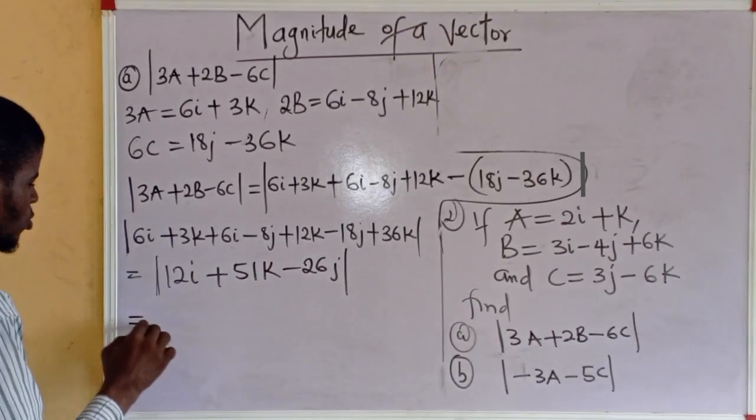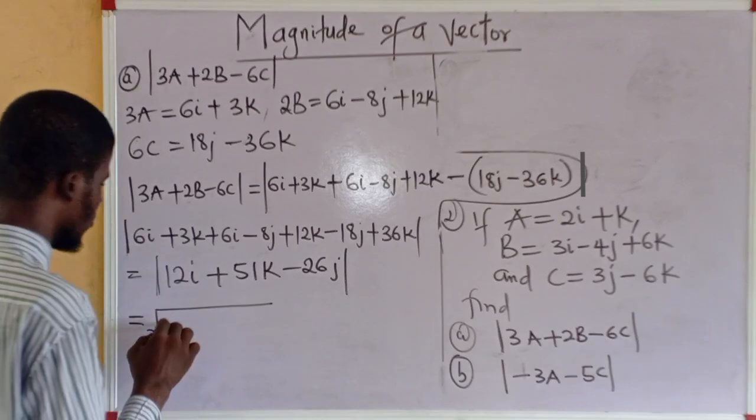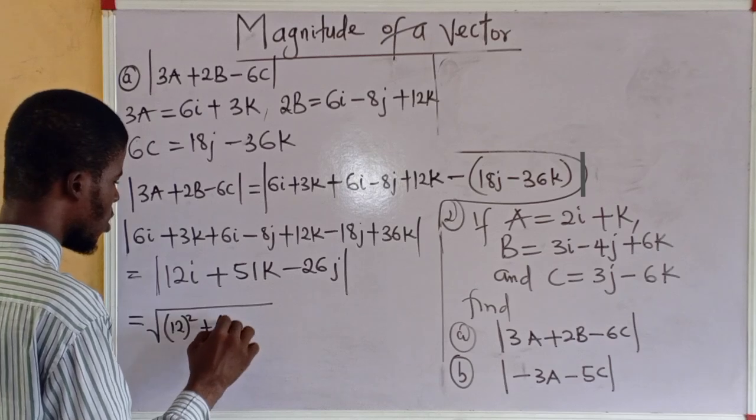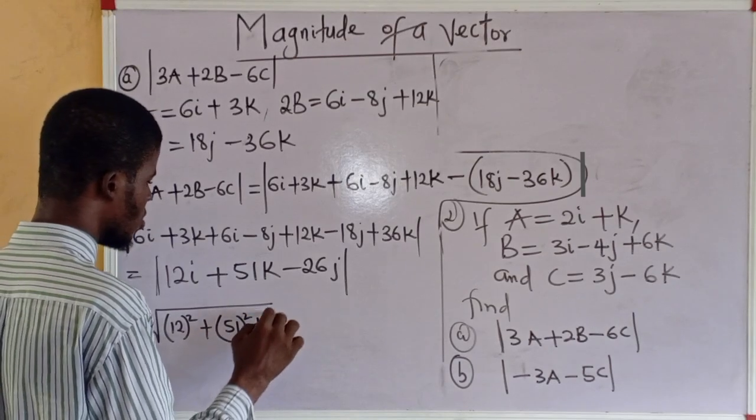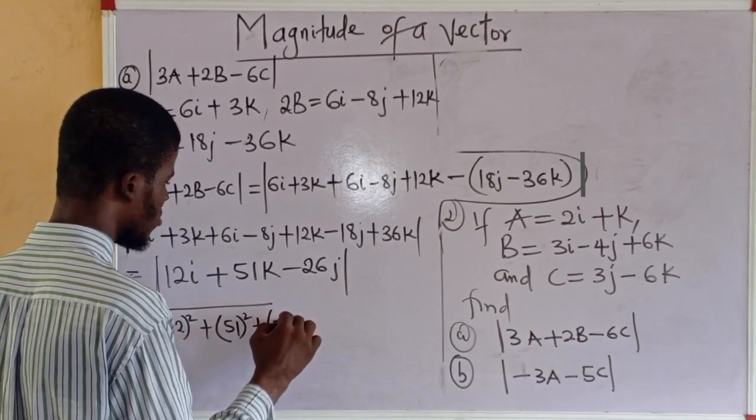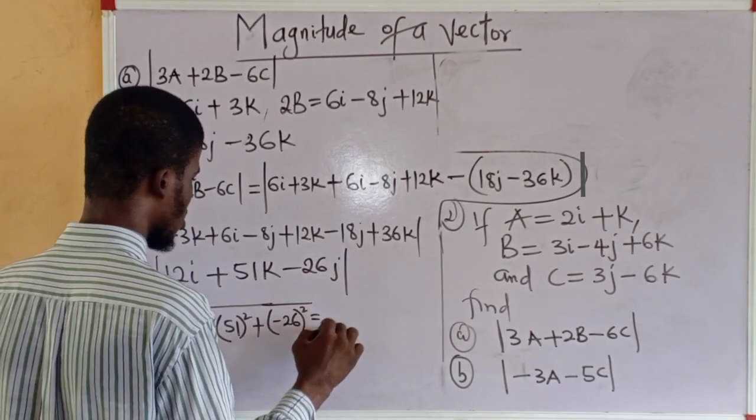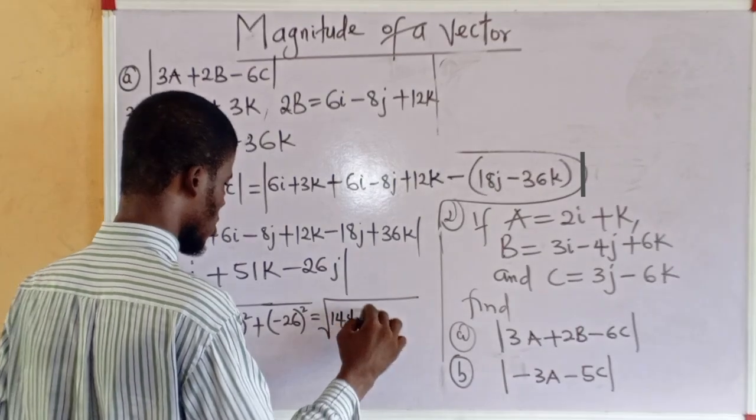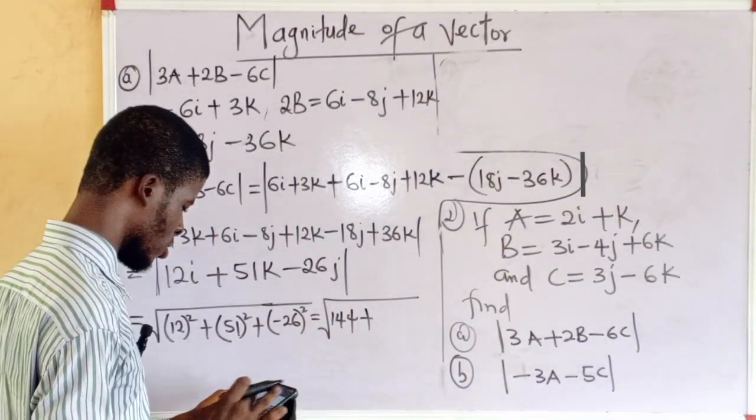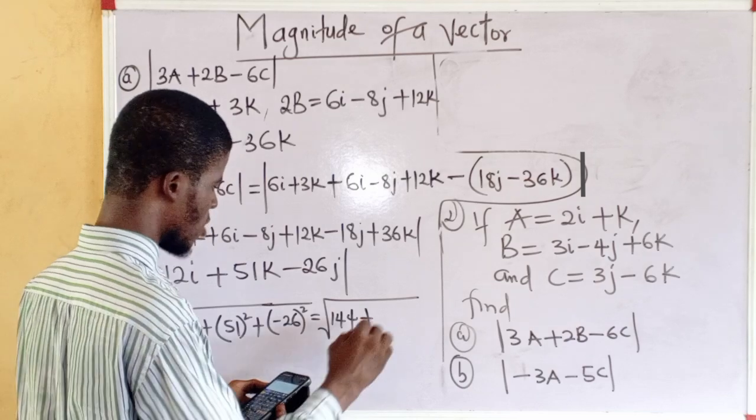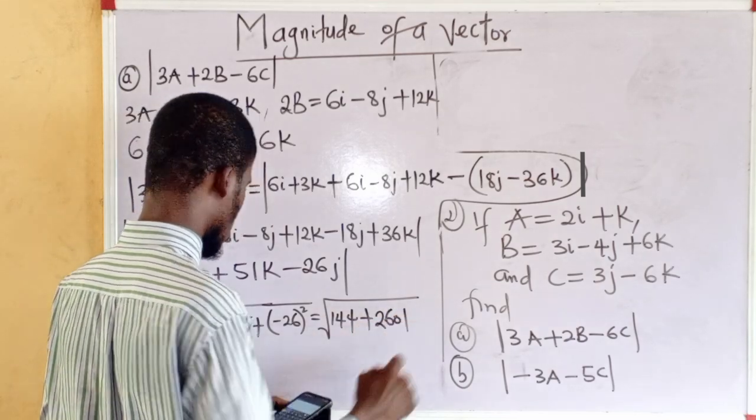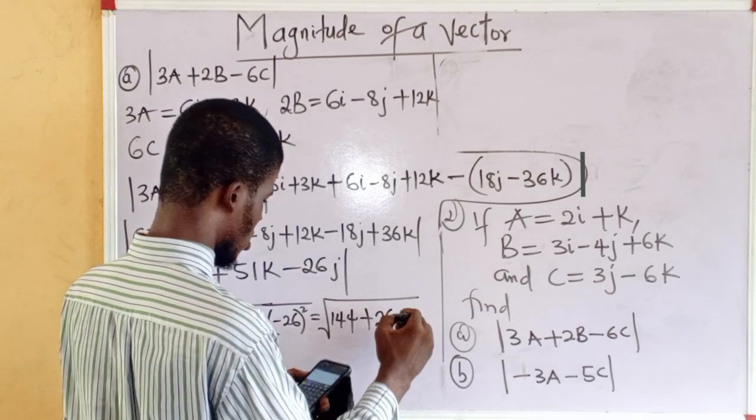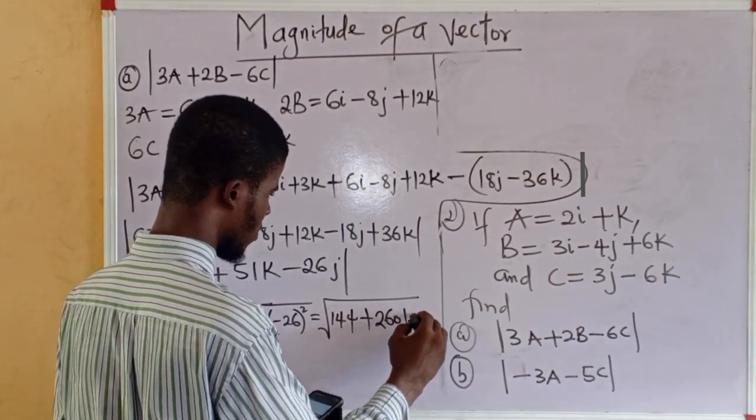It is equal to the square root of 12 squared, 51 squared, minus 26 squared. So, we are having this. 12 squared is 144. What would be 51 squared? 51 squared is 2,601. And what is minus 26 squared? Which is the same thing as saying 26 squared. 676.